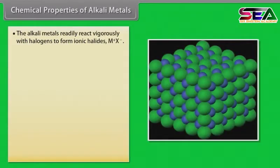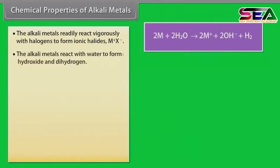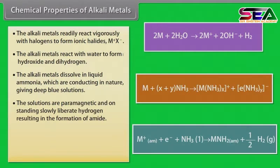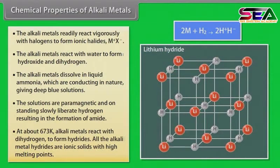The alkali metals readily react vigorously with halogens to form ionic halides (M⁺X⁻). The alkali metals react with water to form hydroxide and dihydrogen. The alkali metals dissolve in liquid ammonia, giving deep blue solutions which are conducting and paramagnetic.